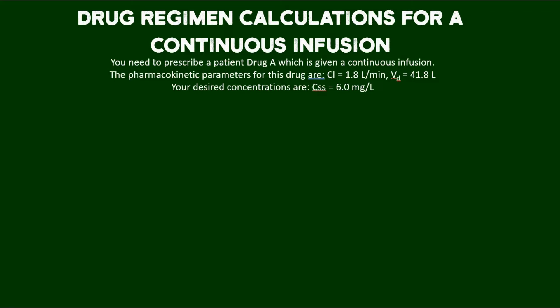Hi everybody, welcome back. In this problem and video, we're going to calculate a drug regimen for a continuous infusion. So here's the scenario. You need to prescribe a patient drug A, which is given as a continuous infusion.